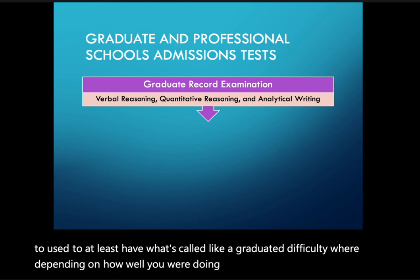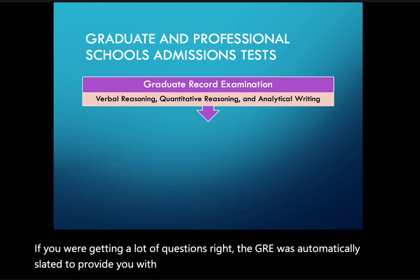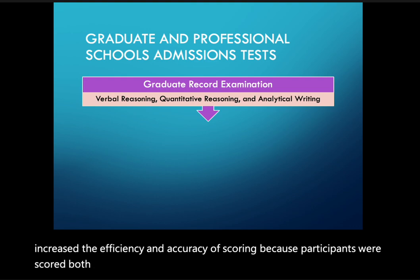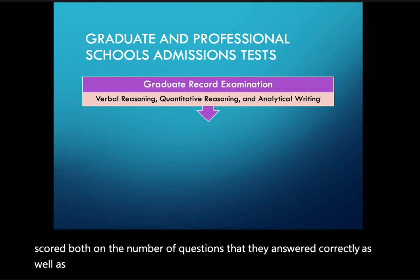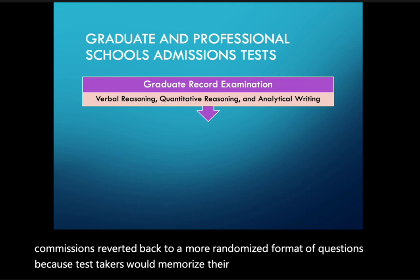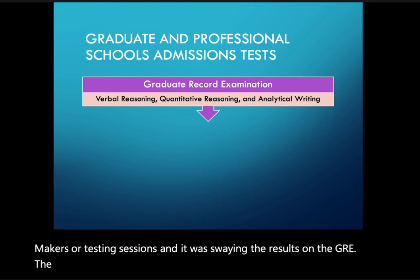The GRE used to have a graduated difficulty format where, depending on how well you were doing, it would automatically provide increasingly difficult questions. This increased the efficiency and accuracy of scoring because participants were scored on both the number of correct answers and the difficulty of those questions. Unfortunately, the testing commission reverted to a more randomized format because test takers were memorizing answers from previous sessions.